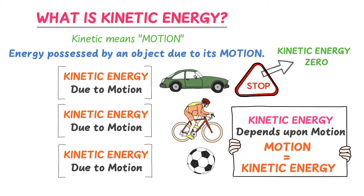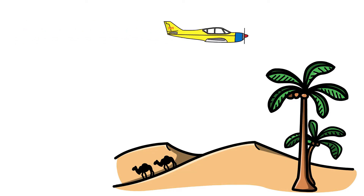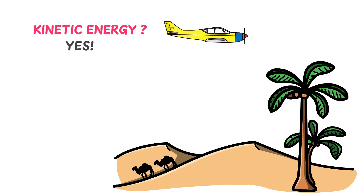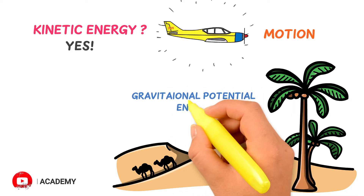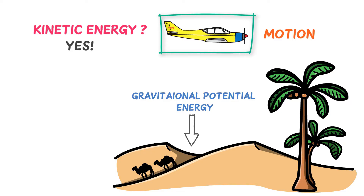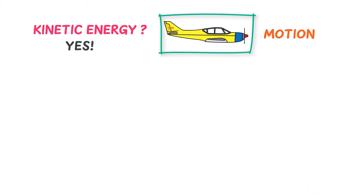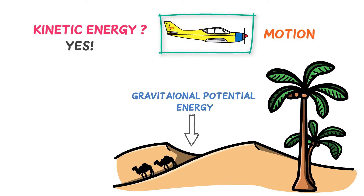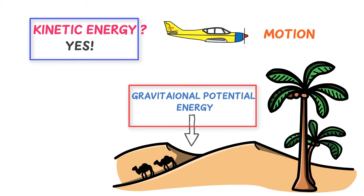Consider an airplane moving above the earth at a certain height. It possesses kinetic energy because it is in motion. But it doesn't only possess kinetic energy — it also possesses gravitational potential energy due to the earth's pull. If we consider only the moving airplane and neglect its surroundings, it only possesses kinetic energy. But if we consider the airplane along with its surroundings, it possesses both kinetic energy and potential energy.